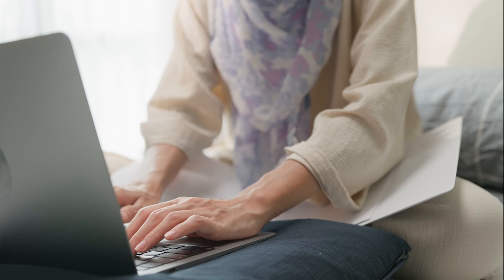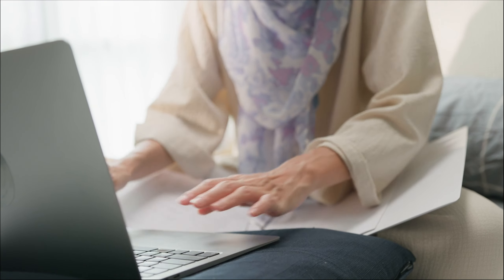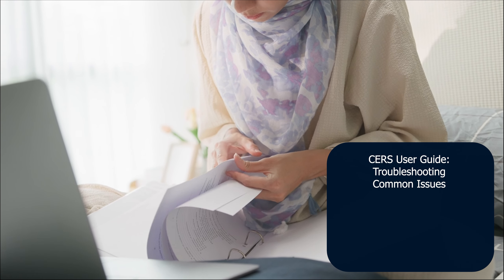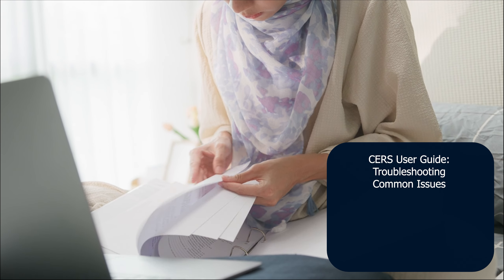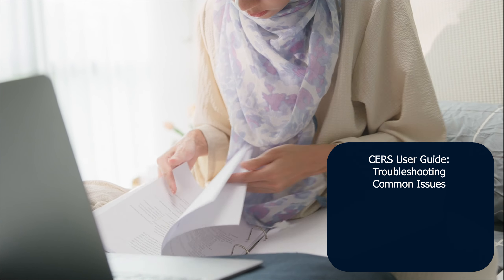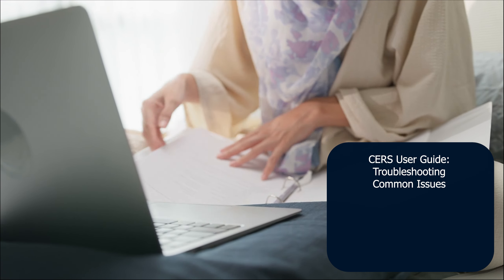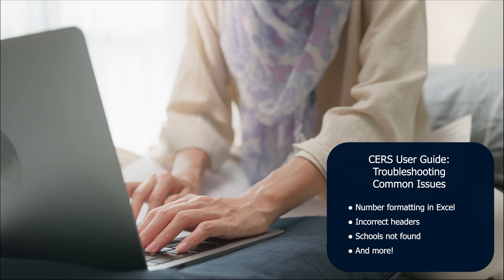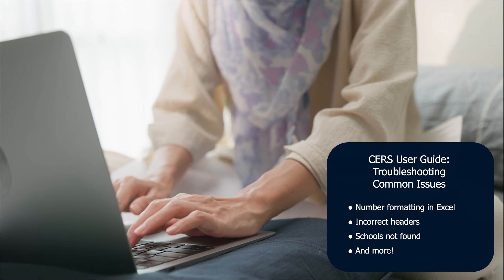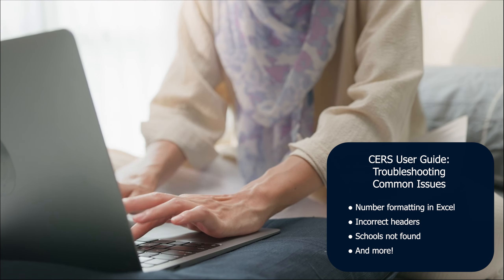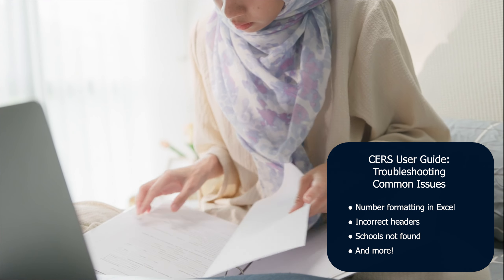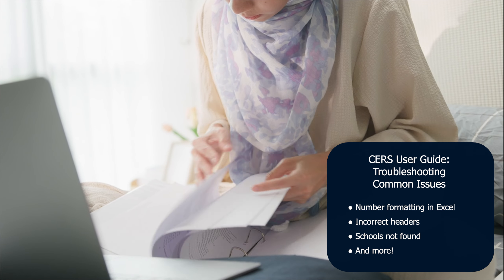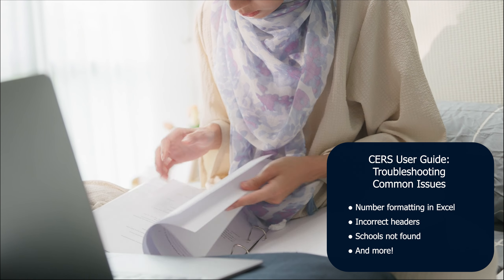There is a great section of the CSRS User Guide called Troubleshooting Common Issues, which is found in the Administrative Features section of the CSRS User Guide under Managed Student Groups. This section contains common issues such as number formatting in Excel, incorrect headers, schools not found, and more. The link to this section is in your resource guide and lists common errors and tips to correct them.